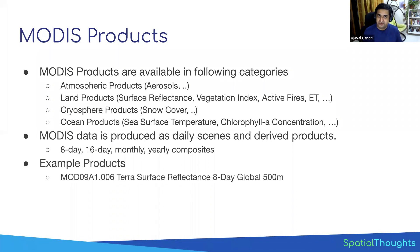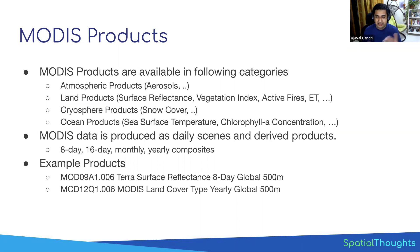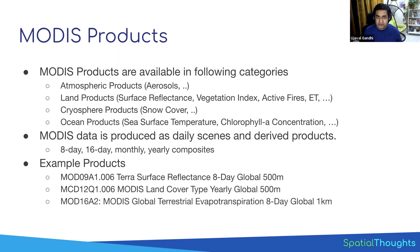Another thing that's confusing about MODIS when you start working is that there are so many different products and combinations, so the product names can be slightly confusing. Product names look like MOD09A1006 — what that stands for encodes the product type, temporal resolution, and spatial resolution all in the name. For example, you can get a Terra surface reflectance product at an 8-day composite at 500 meters, a yearly land cover classified product at 500 meters, or an evapotranspiration product at 8-day intervals at one kilometer. There are many combinations of spatial resolution, temporal resolution, and product type available.